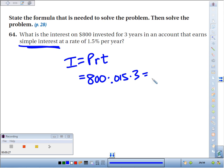800 times 0.015 times 3, and we are going to make $36 in interest.